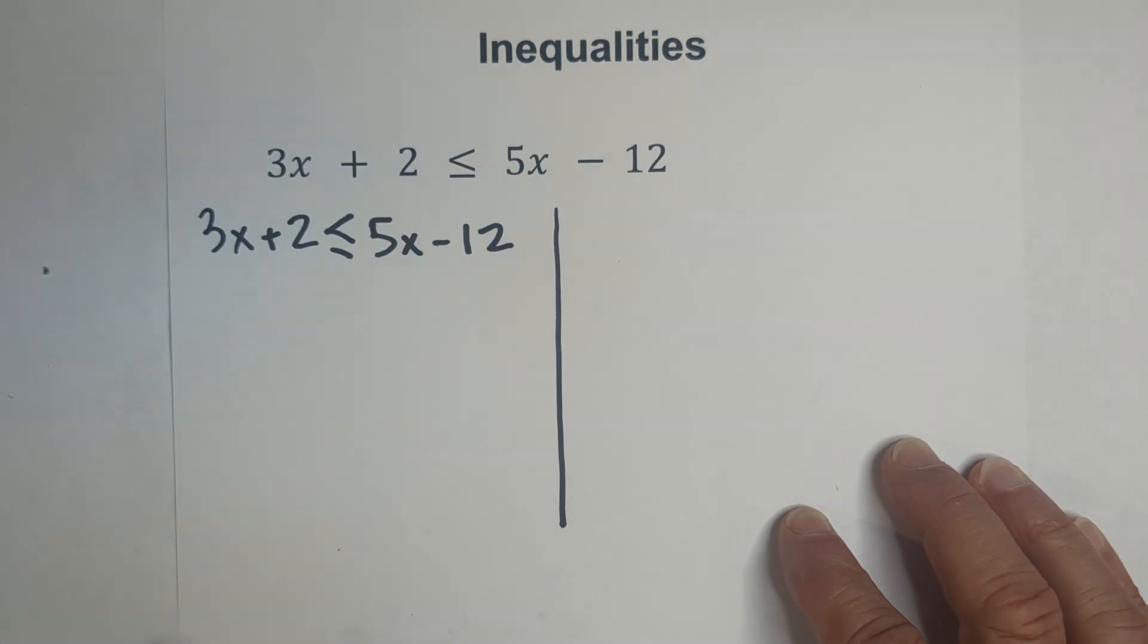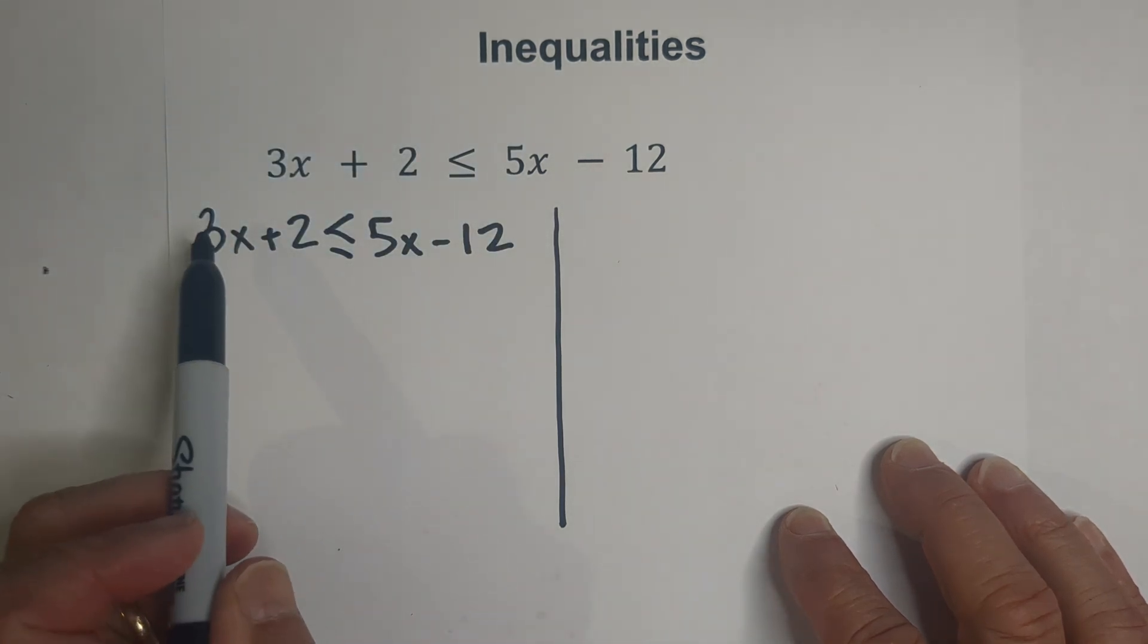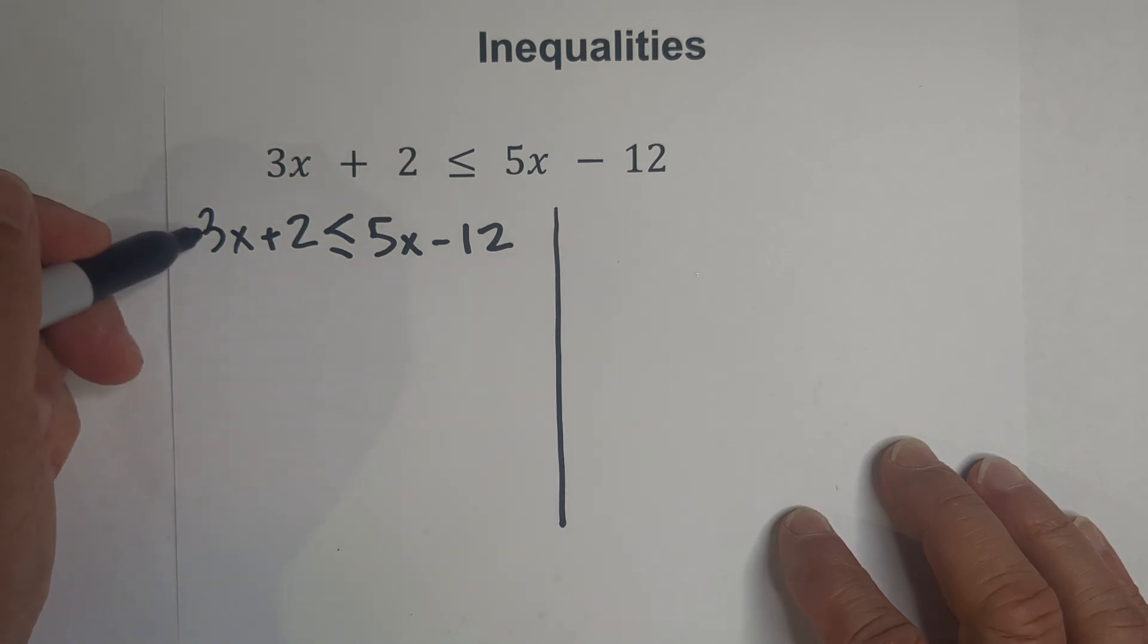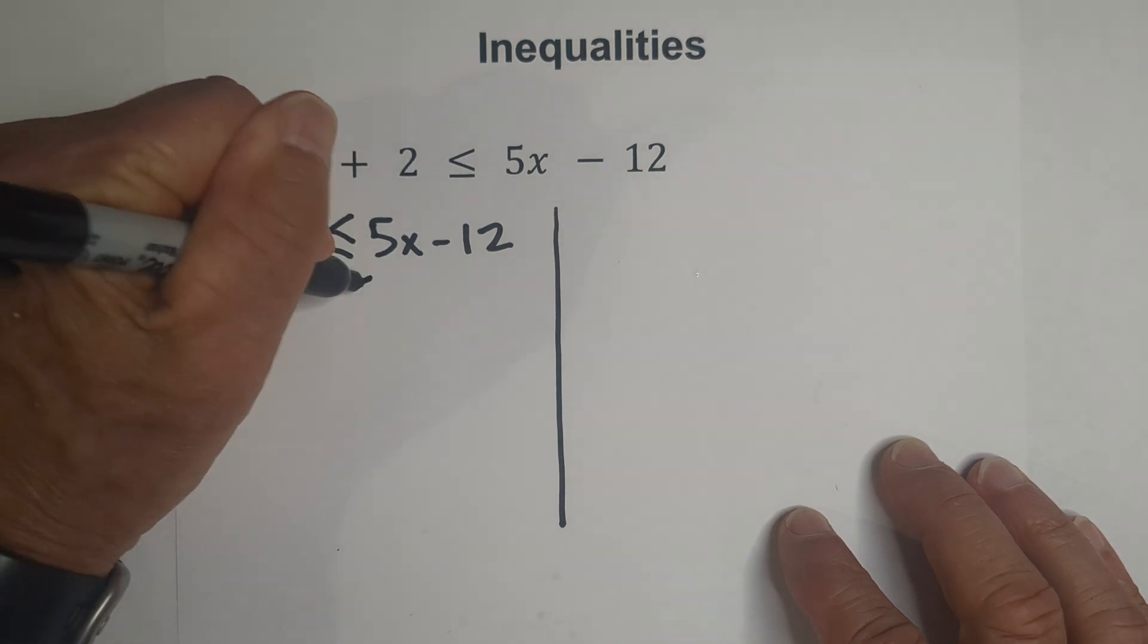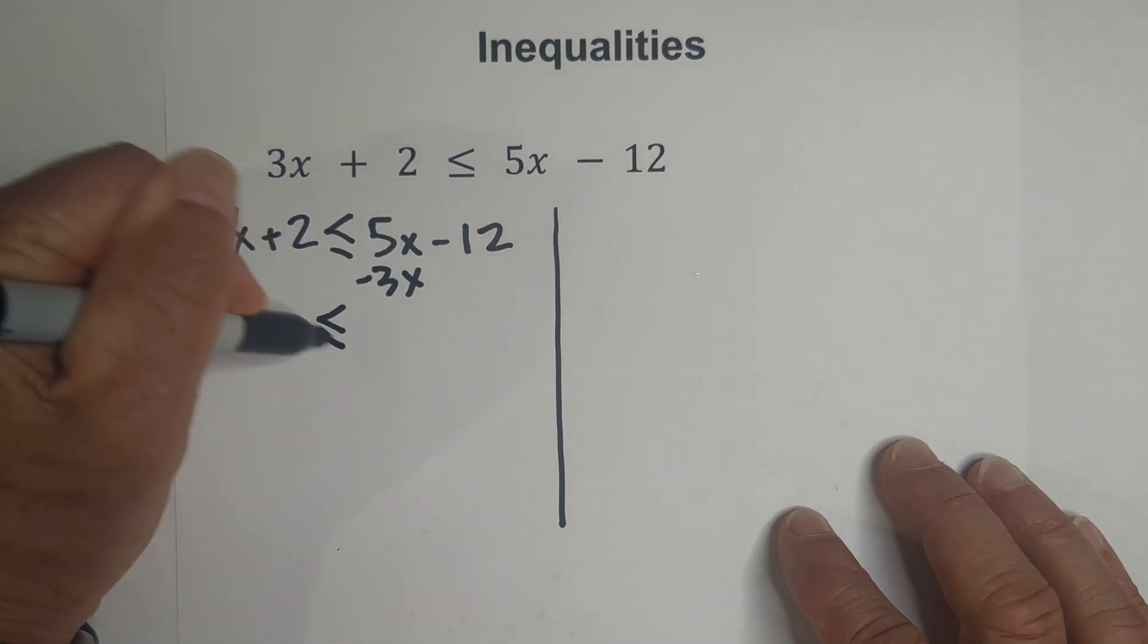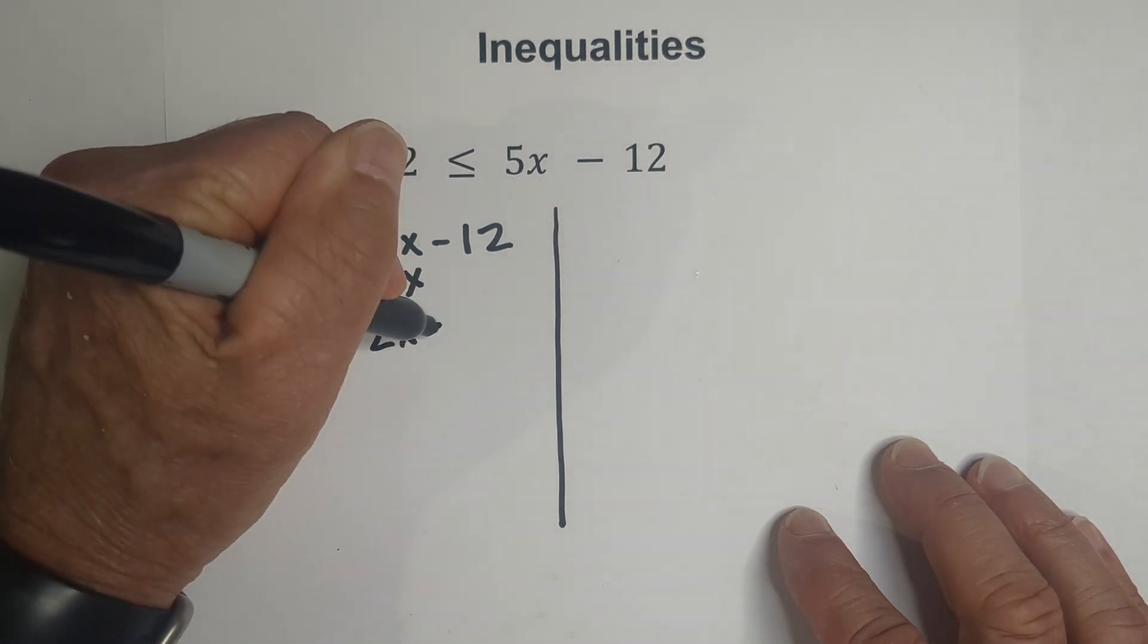On this side, let's subtract the smaller variable from the larger variable. The advantage is this often avoids a negative number. So I'm going to start with the variables and subtract 3x from both sides. Now these cancel and I bring down the 2. Then 5x minus 3x is 2x minus 12.